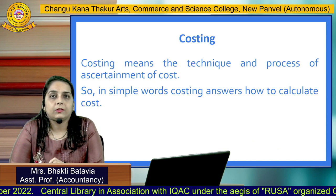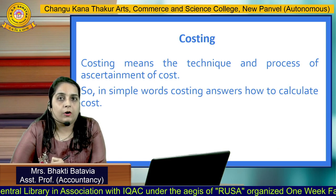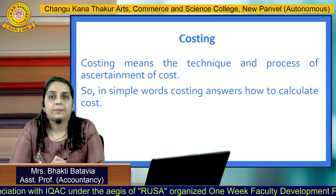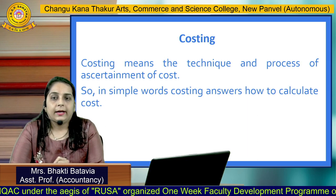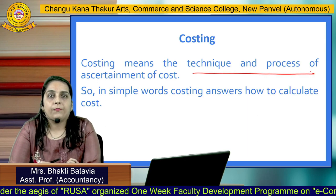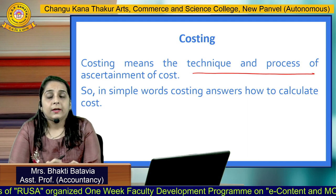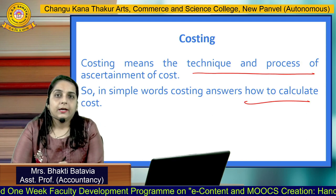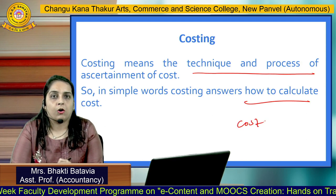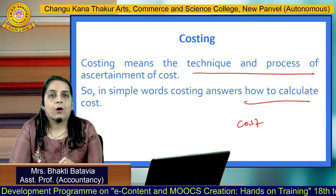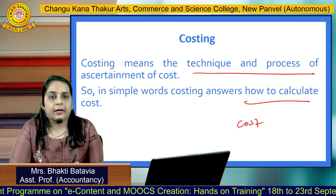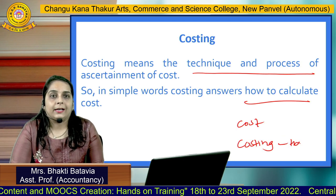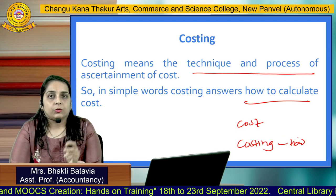The next element is Costing. You should understand how to calculate cost — and when you get the answer for this, it becomes Costing. Costing means the technique and the process of ascertainment of cost. In simple words, costing will answer how to calculate cost. So: Cost is measuring all elements in Monetary Terms, and Costing is how to calculate that cost.